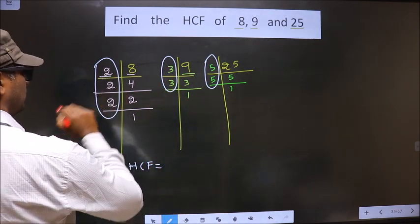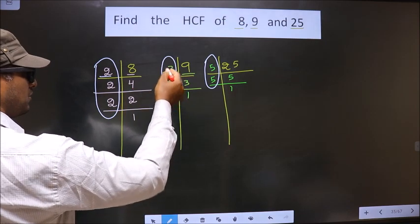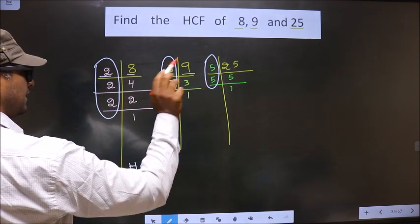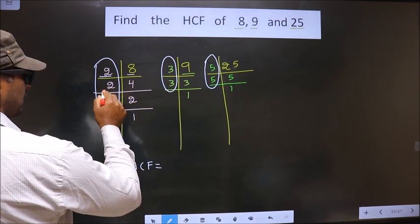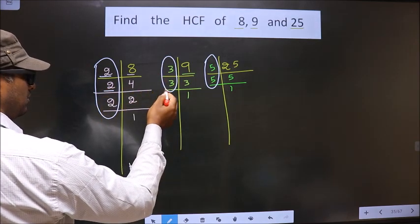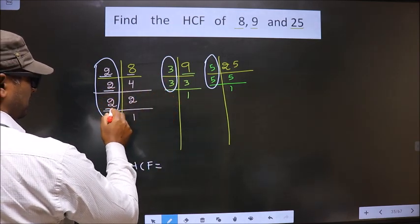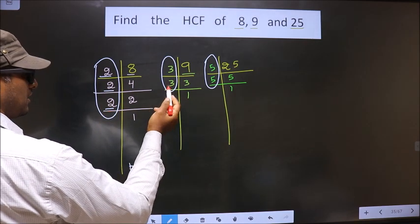Starting with the number 2. Do we have number 2 here? No. So no need to check the other places. Go to the next 2. Do we have 2 here? No. Go to the next 2. Do we have 2 here? No.